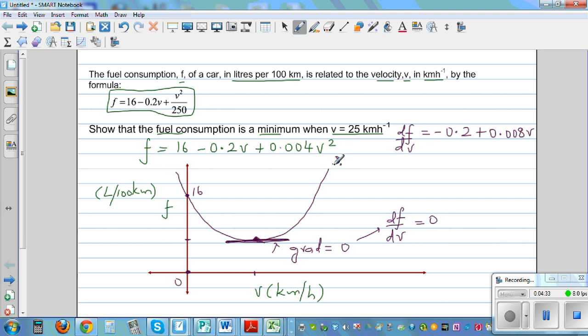Therefore, to find the minimum fuel consumption, you have the minimum fuel consumption at this point, and at this point the gradient is 0. So we already know the formula for the gradient function, which is this. So I'm going to set this equal to 0. So I can say 0.008V minus 0.2 is equal to 0.